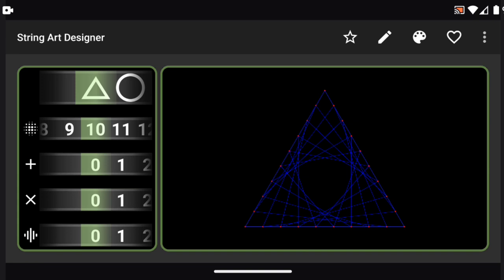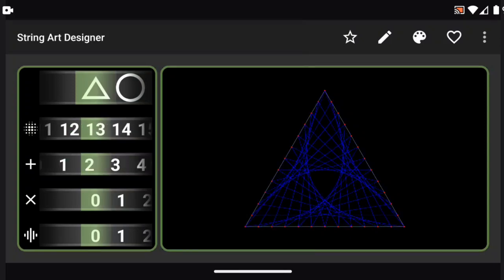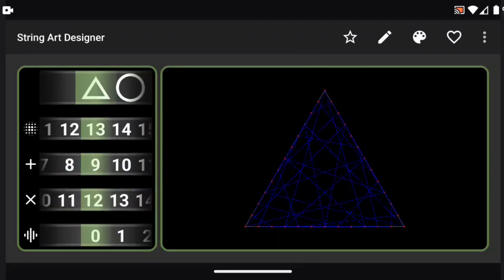For this design I want to have two triangles, and for the first layer I decided to use an app on my phone called String Art Designer. Here you can choose your shape and then the number of nails per side, and you can just play around to find something that you think looks good.